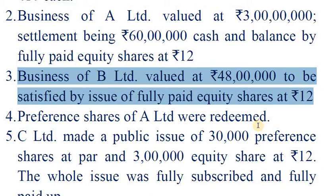Fourth entry — entry for receiving purchase consideration. The entire purchase consideration was received in the form of equities. Therefore, the general entry is: Equities of C. Ltd. account Dr. to C. Ltd. account, 48,00,000.